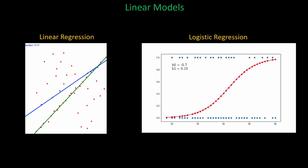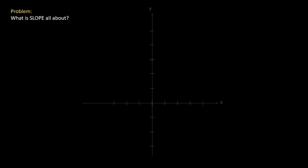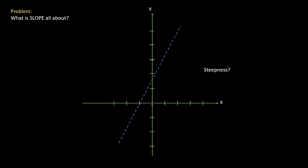I'd like to spend a lot of time today talking about linear regression, and to do that we have to understand what a slope is all about. This probably takes you back to high school math class — talking about the slope of a line, which can really be thought of as steepness. We take our line and think: how steep is it, and how do I quantify that steepness?